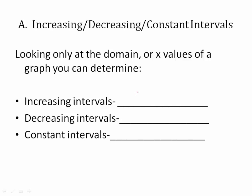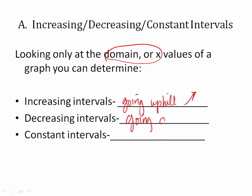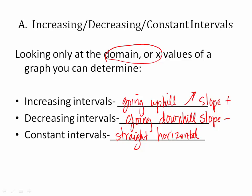Now looking at the increasing, decreasing, or constant intervals of the graph — we're only looking at x values, the domain. An increasing interval means visually it's going uphill; the slope is positive. Decreasing means the slope is going downhill, in a negative direction. Constant means it is a straight horizontal segment — that's where the slope is zero. Those are your three: increasing, decreasing, or constant.